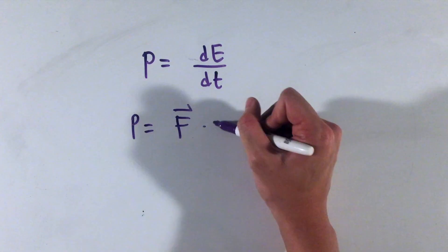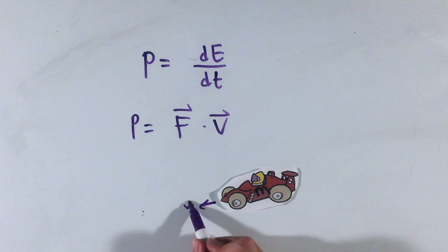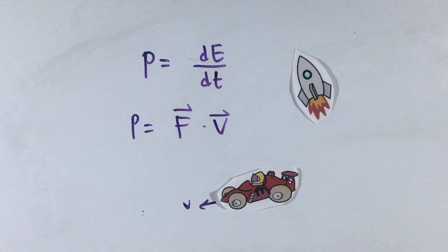Lastly, one final rewriting of some AP Physics 1 formulas are the power equations. While we learned it to be the rate of change of energy or the product of force and velocity, the more accurate equations are the derivative of energy with respect to time and the dot product between force and velocity.